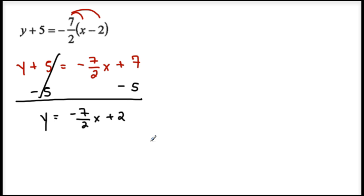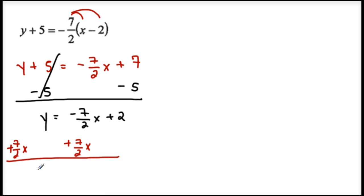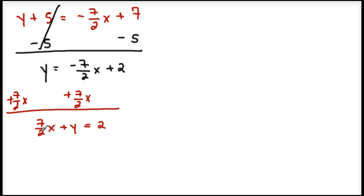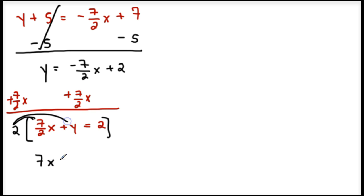For standard form, I need to add 7 halves x to both sides. So I get 7 halves x plus y equals 2. My leading coefficient is already positive. But I have a fraction — I need to get rid of 7 over 2. I multiply the whole equation by 2 since my leading coefficient is already positive. 2 times 7 halves x is 7x; 2 times y is plus 2y; 2 times 2 is 4. So my standard form is 7x plus 2y equals 4.